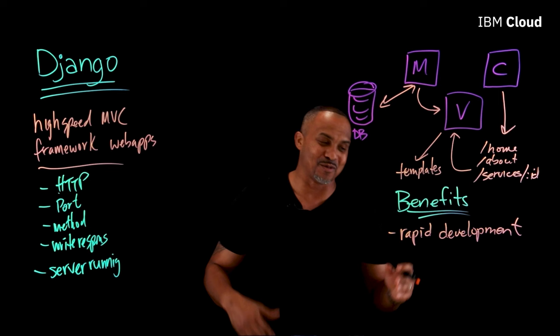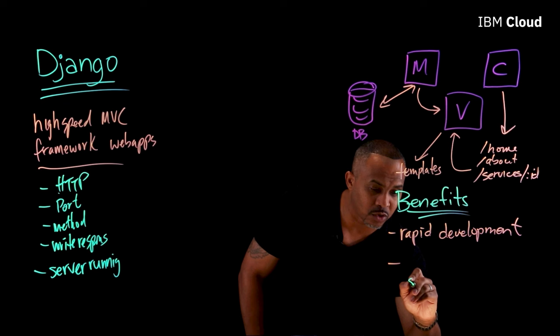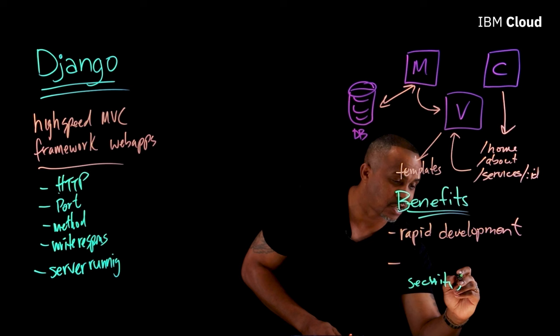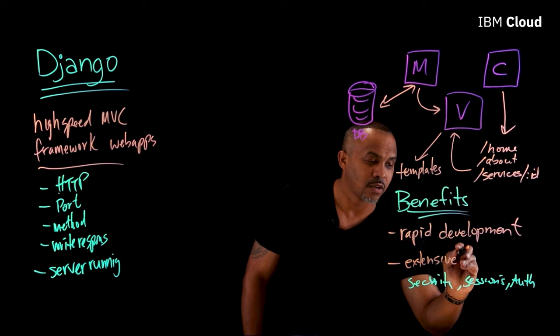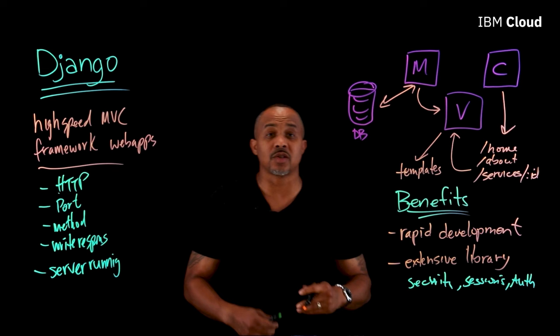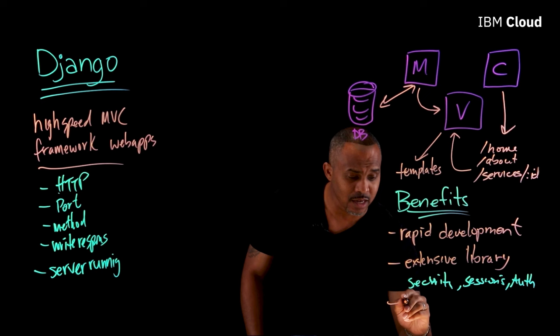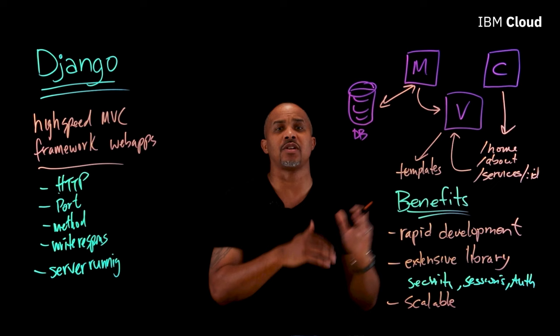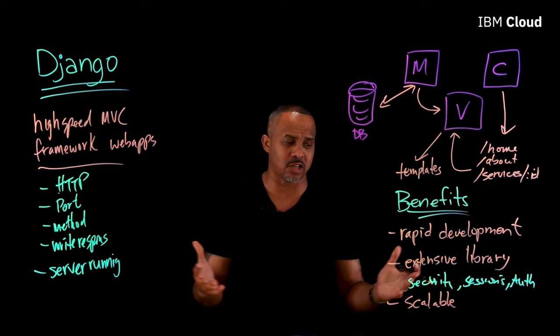Another thing Django provides — and definitely check out the Django website — is more built-in services for you to use, like security, sessions, and authentication. There's going to be an extensive library of plugins and additional capabilities that, without Django, you would have to write from scratch. It gives you all of that to jumpstart your work. And lastly, since we already have this architecture, it is very scalable — I can grow from three routes to 300 routes with a comfortable way to define my views and consolidate all the connections my application needs.